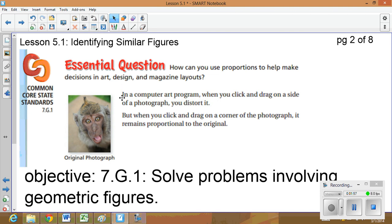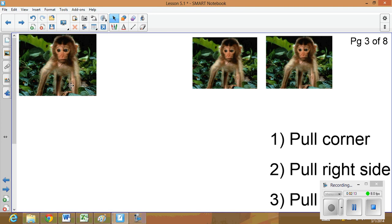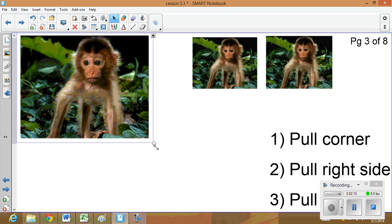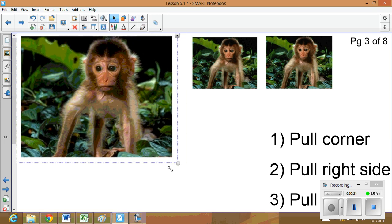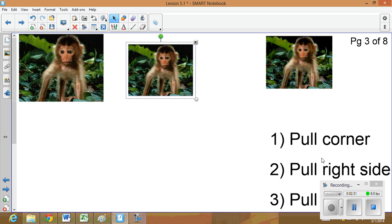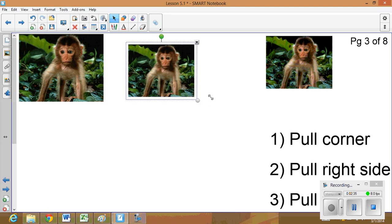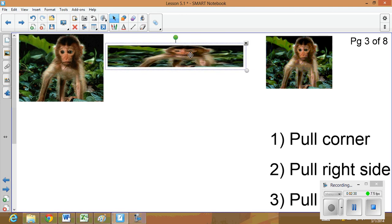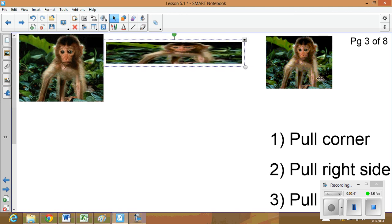So here we have two questions or comments. In a computer art program, when you click and drag on the side of a photograph, you distort it. When you click and drag on the corner of a photograph, it remains proportional to the original. So here's what that means. If I take this picture, click on it and just drag it in the corner, it remains proportional. That means the picture gets bigger or smaller, but it never distorts or changes from the original.